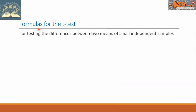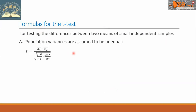Let us now see the formulas for the t-test for testing the difference between two means of small independent samples. This is the first formula, used when population variances are assumed to be unequal. It is T equals x-bar sub 1 minus x-bar sub 2, all over a big radical whose radicand is a sum of two fractions: S sub 1 squared over N sub 1, plus S sub 2 squared over N sub 2.